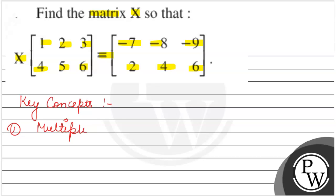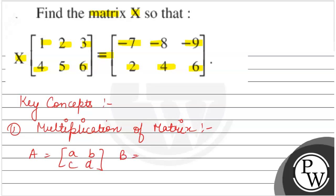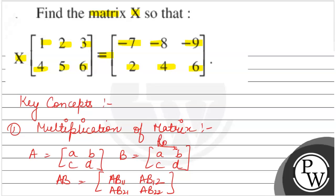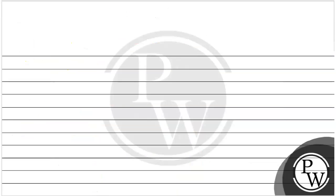The first concept used is multiplication of matrix. In matrix multiplication A·B, we compute element AB₁₁ as first row times first column, AB₁₂ as first row times second column, AB₂₁ as second row times first column, and AB₂₂ as second row times second column. This is our matrix multiplication concept.